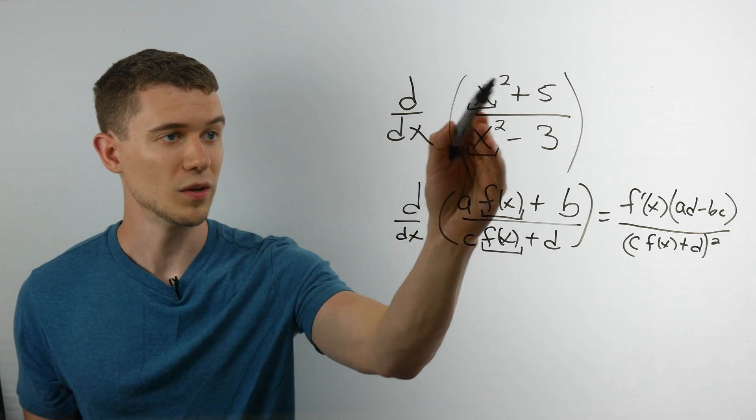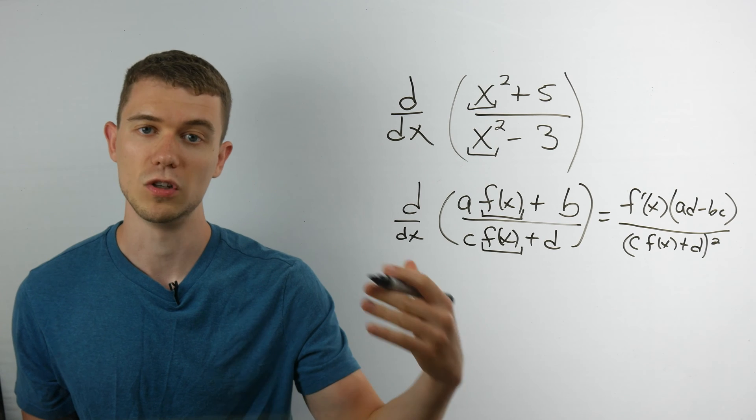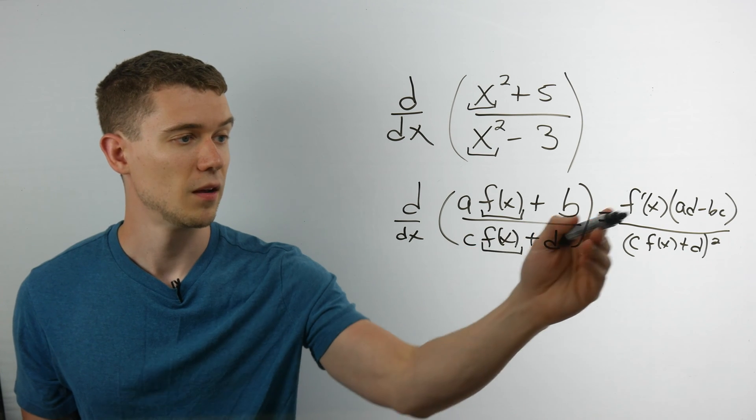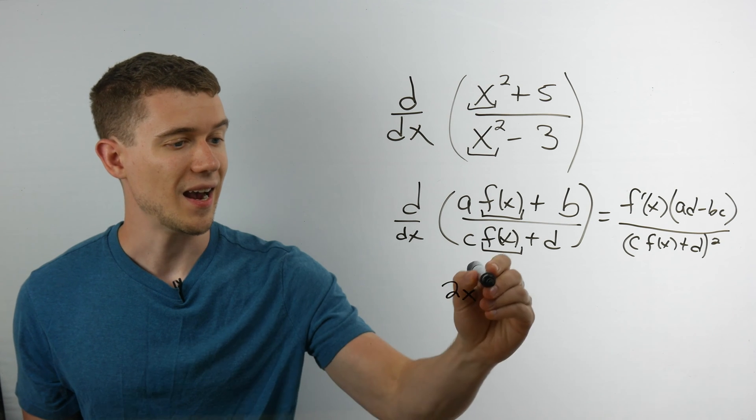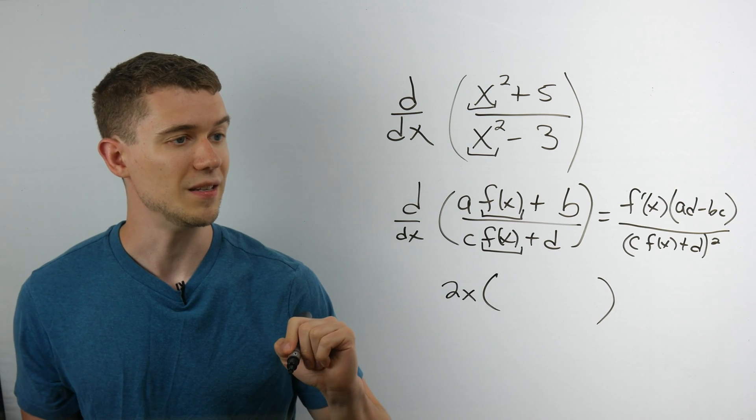So f prime of x. What's the derivative of x squared, which is f of x in this case? The derivative of x squared is 2x, and then it's times ad minus bc.